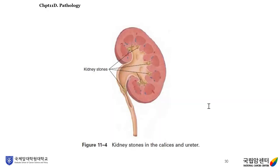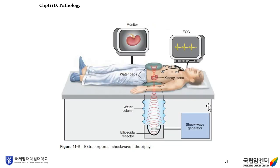This figure shows kidney stones in the calices and ureter (shown in yellow). This shows ESWL: the patient with kidney stones is lying on the bed, with monitors and ECG present. From the outside, you can see the shock wave generator instrument that uses shock waves to crush the kidney stones in the patient.